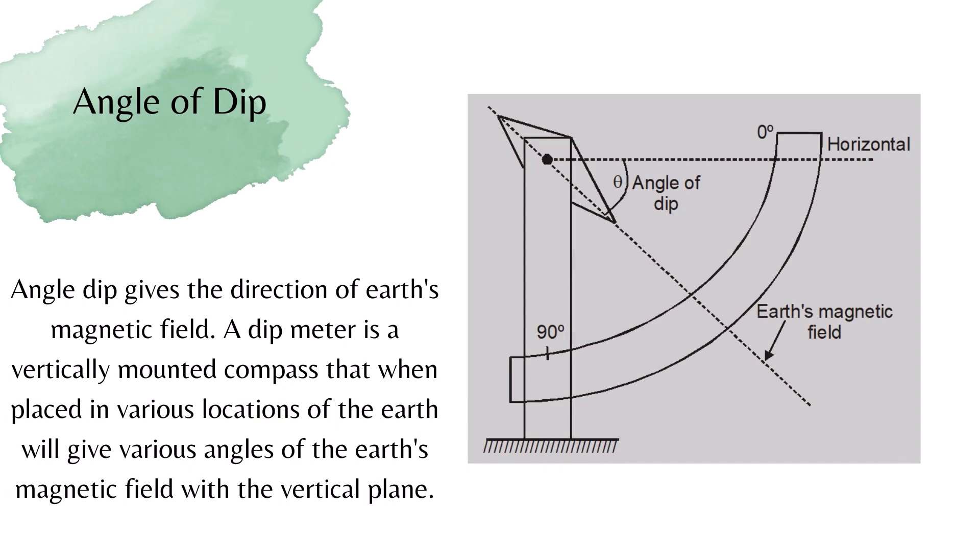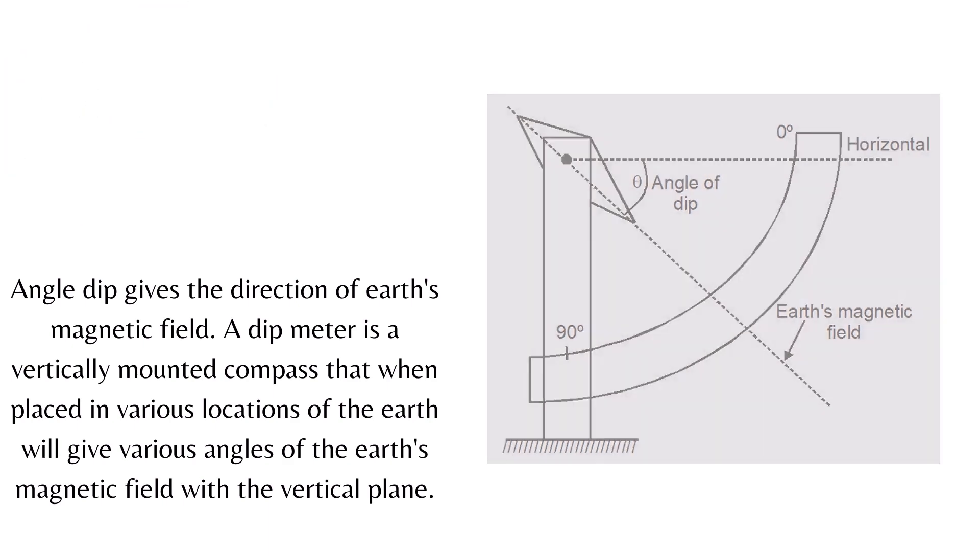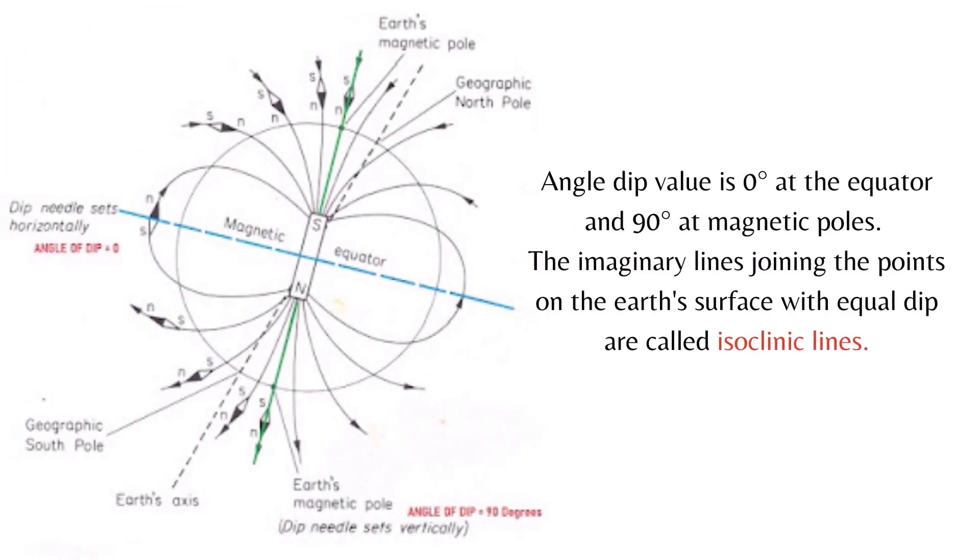Let's talk about angle of dip. Angle of dip gives the direction of earth's magnetic field. Earth is like a large magnet with a large magnetic field around it. A dip meter is a vertically mounted compass that, when placed in various locations of the earth, will give various angles of earth's magnetic field with the vertical plane. This angle is called angle of dip.